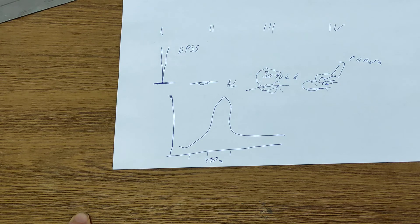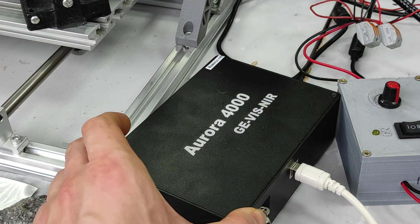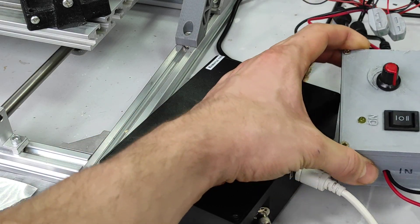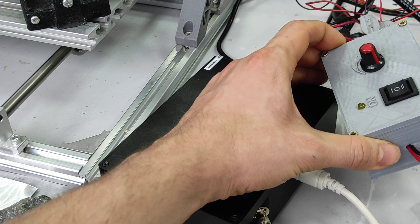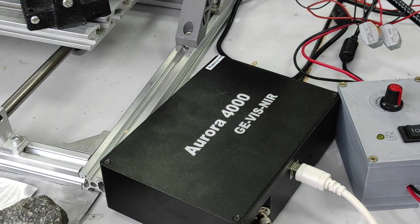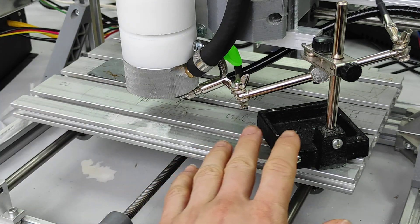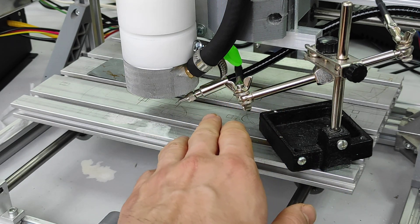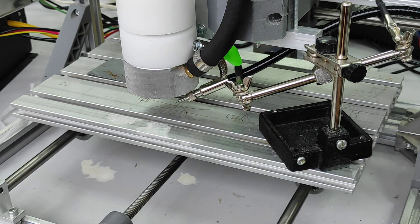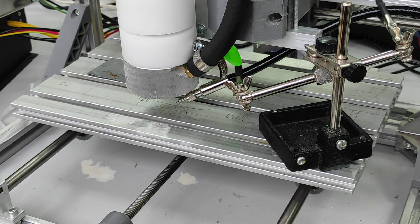So we have an Aurora 4000 spectrometer, we have our dynamic PWM so I can adjust power from our DPSS laser module. Here is our 10-watt DPSS laser module and we have a fiber that goes from the spectrometer so we can get information from the plasma that appeared.